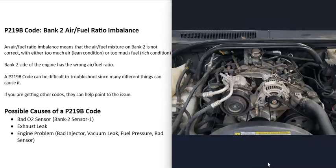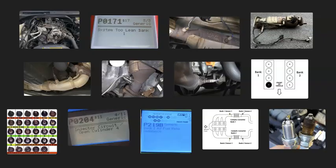So that's basically it. Some kind of problem on bank 2 is causing the engine to run lean or rich. I just wanted to give a basic overview of how you go about fixing a vehicle with a P219B code. If you have anything to add, please comment below. If you have questions, ask me. If this video helps you, please click like and subscribe.